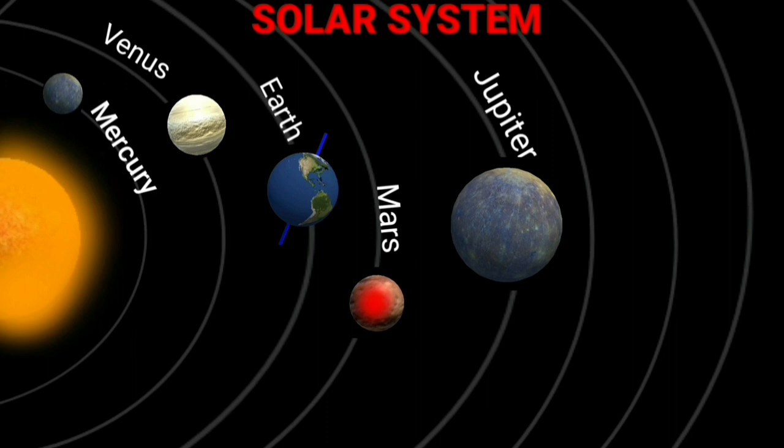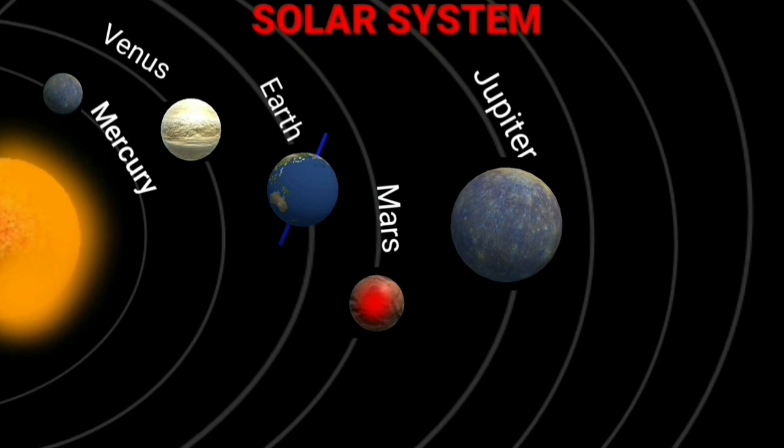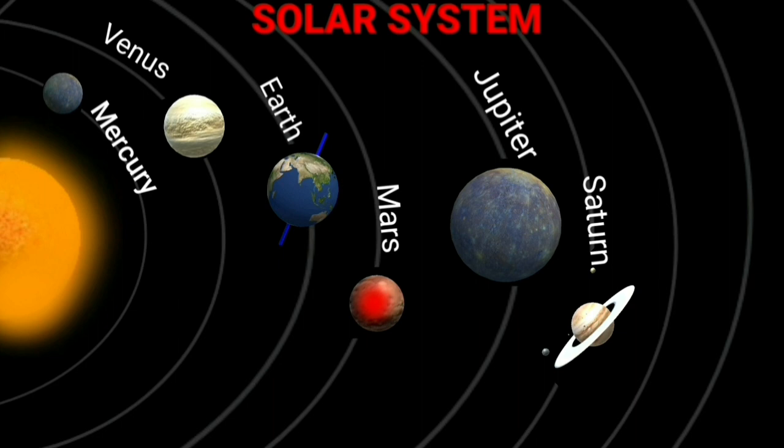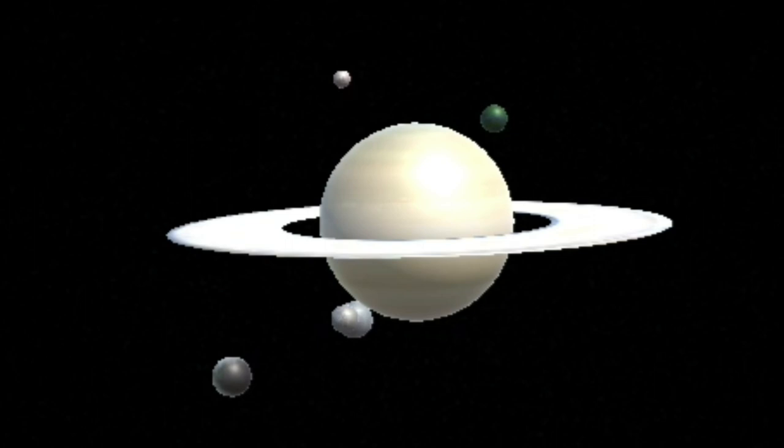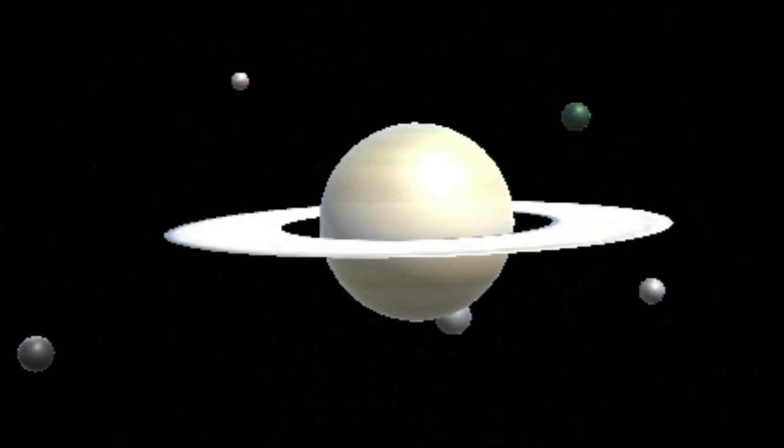After Jupiter, Saturn is the second biggest planet of the solar system. It possesses well-developed set of rings around it. Saturn also has a large number of satellites. It takes about 29.5 years to complete one revolution around the sun. It is said to have 30 satellites or moons of its own.